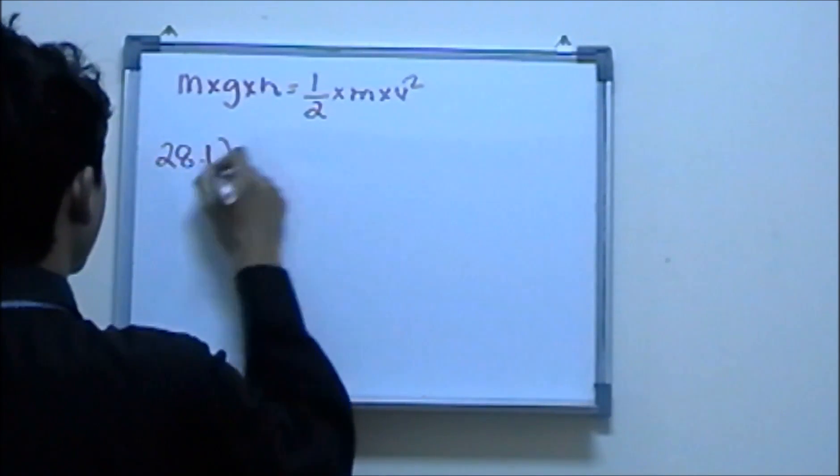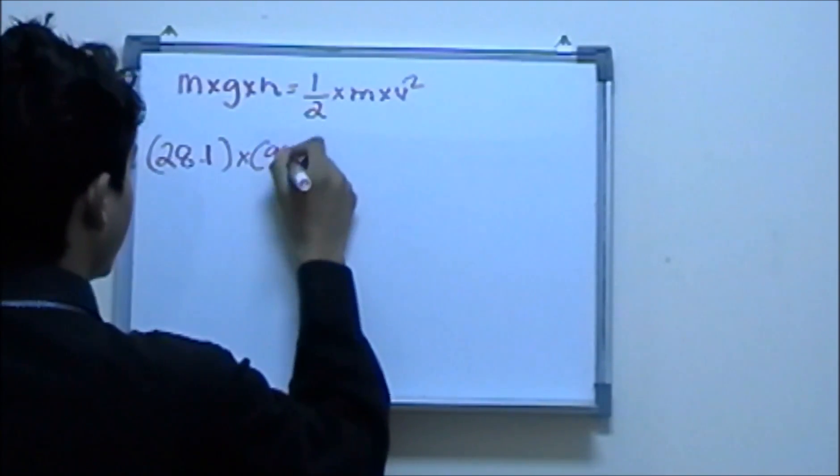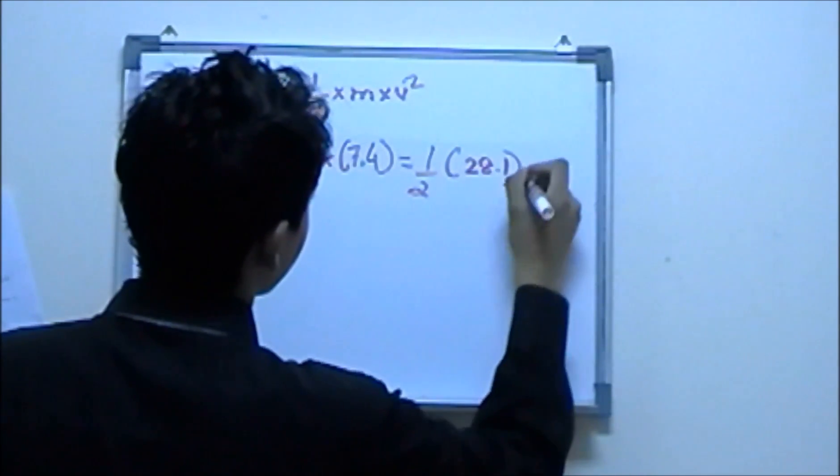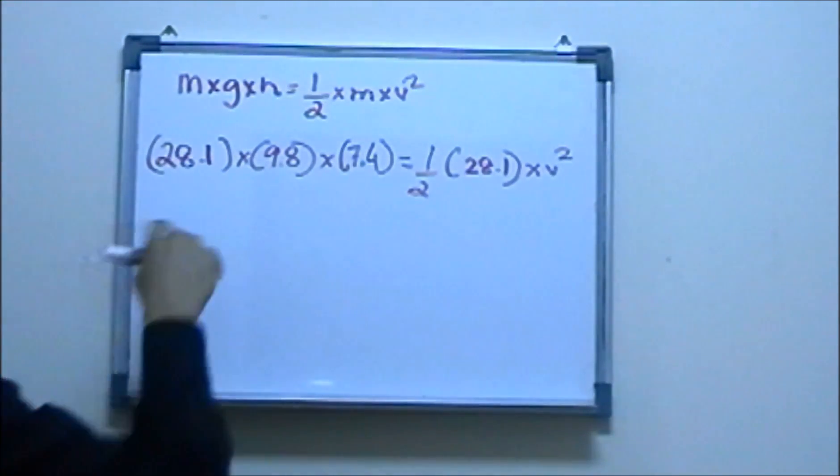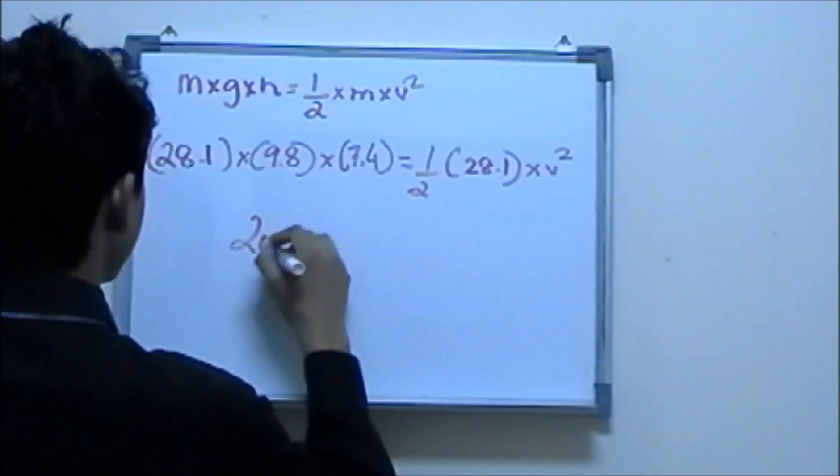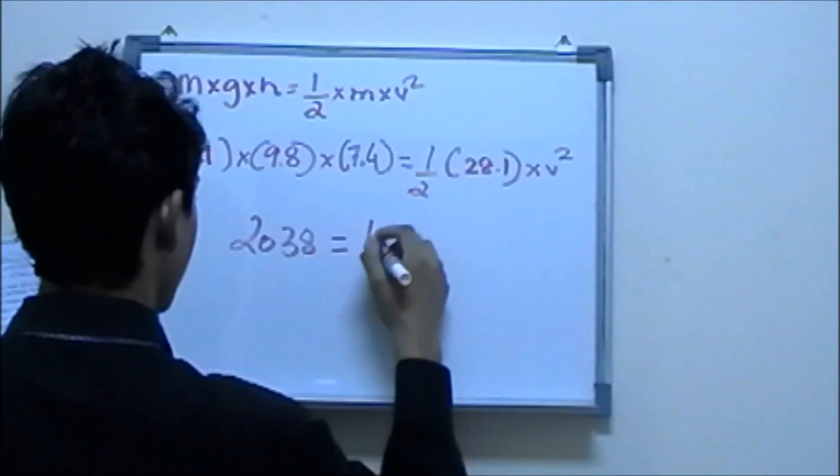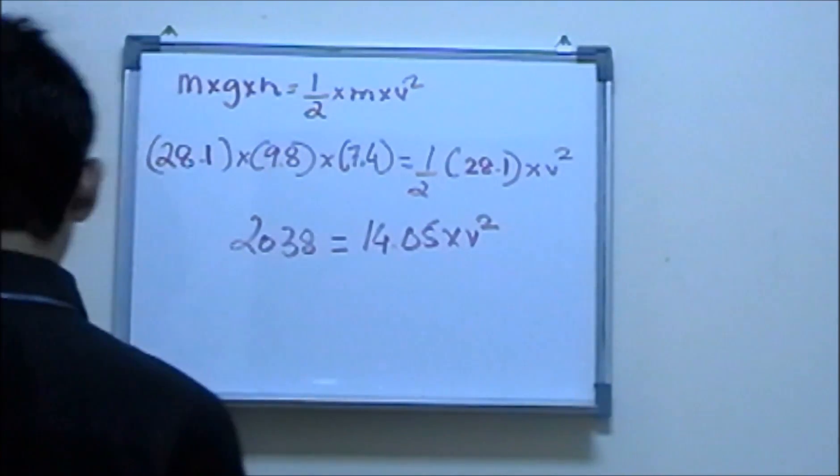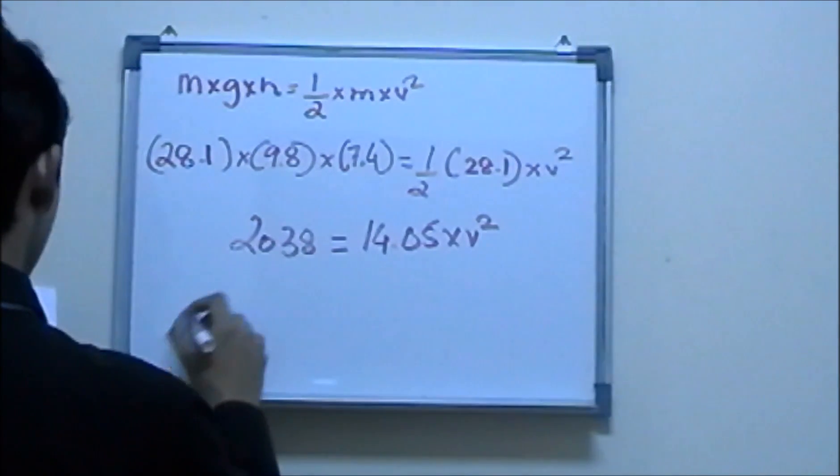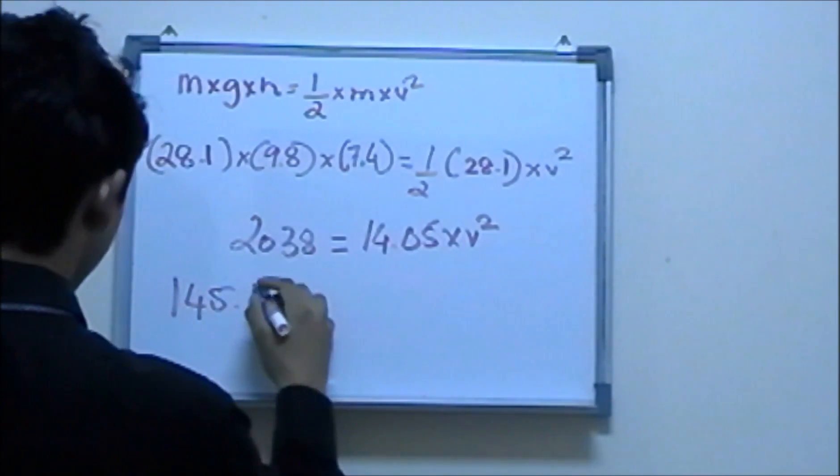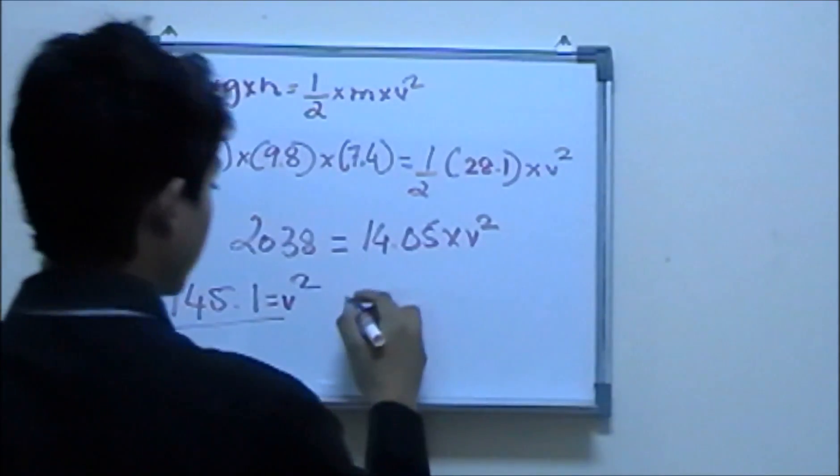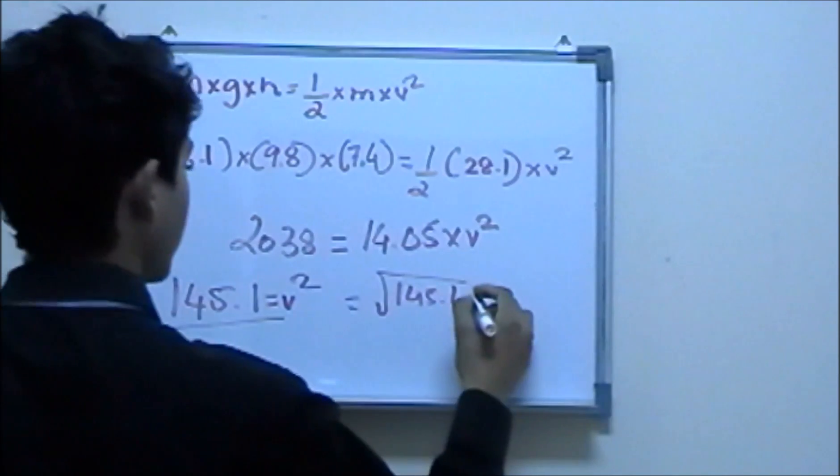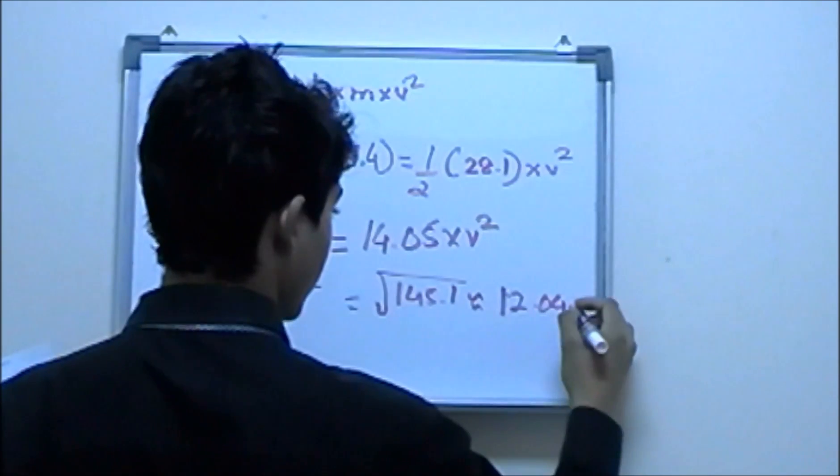Let's plug in the numbers: 28.1 kg for mass times gravity 9.8 times height 7.4. We know the mass is 28.1 and we don't know velocity squared. If you were to solve this, you would be getting 2038 is equal to 14.05 times velocity squared. Now you divide 14.05 on both sides, you should be getting 145.1 is equal to v squared. Now what we do to find the velocity is just square root of 145.1, and you would be getting 12.04 to be your velocity.